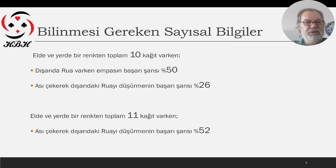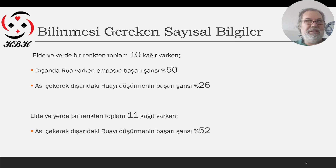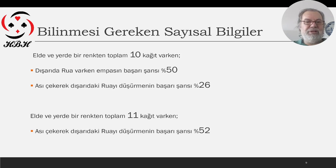Son olarak da, on ve on bir kağıtta: bizde on kağıt varsa dışarıda sadece üç kağıt var demek. Örneğin, ruha varken en pasın başarı şansı yüzde elli. Ası çekerek dışarıdaki ruhayı düşürmenin başarı şansı ise yüzde yirmi altı. Yani üç tane kağıt varsa en pası denemek lazım. Dışarıda iki kağıt var, on bir kağıt bizim tarafta. Ası çekerek düşürme şansımız yüzde elli iki, çünkü kağıtların bir-bir dağılma olasılığı yüzde elli iki; iki-sıfır dağılma olasılığı yüzde kırk sekiz. Bu yüzden elimizde on bir kağıt varken ruhayı düşürmek için ası çekeriz.